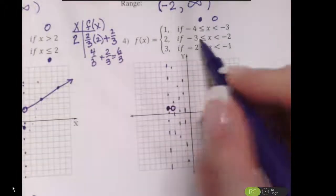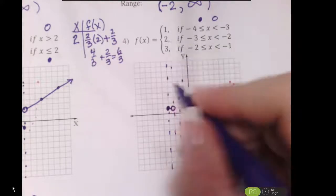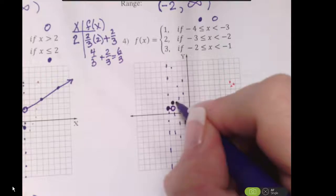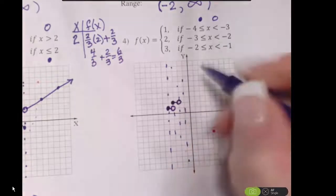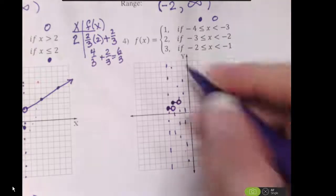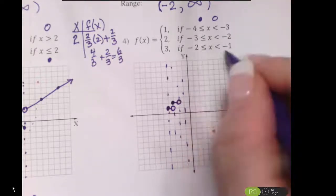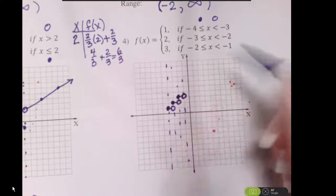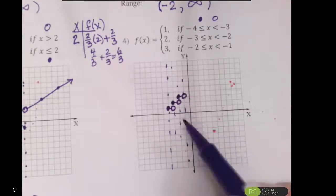Then between negative 3 and negative 2, it's going to be equal to 2. So I'm jumping up here to 2 with a closed circle and an open circle. Then the same thing in the last one — it equals 3 between negative 2 and negative 1, and that's a closed and an open circle. So there's my function.